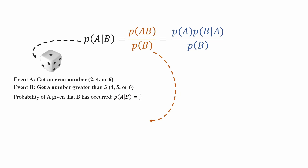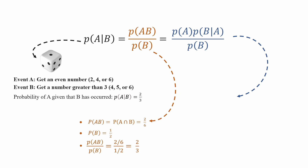You can also calculate this conditional probability using another format. For instance, the probability of A and B both happening is one-third, or two-sixths. The probability of B is one-half, giving you the same result of two-thirds. You can also reverse the A and B positions — P(A) is one-half, P(B given A) is calculated, and P(B) is also one-half. Putting them together gives you exactly the same number.